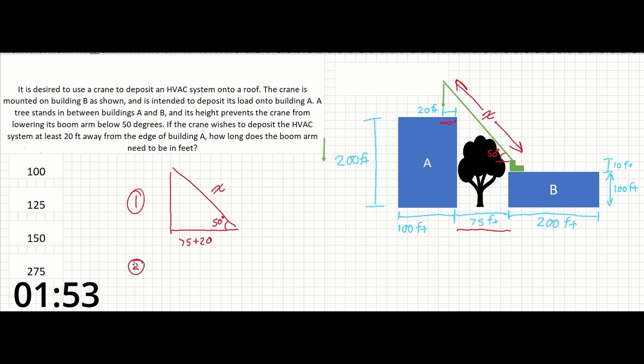So rearranging the triangle, we can say that the cosine of the angle equals the adjacent over the hypotenuse. So filling those in, we have cosine of 50 degrees equals 95 over the hypotenuse.